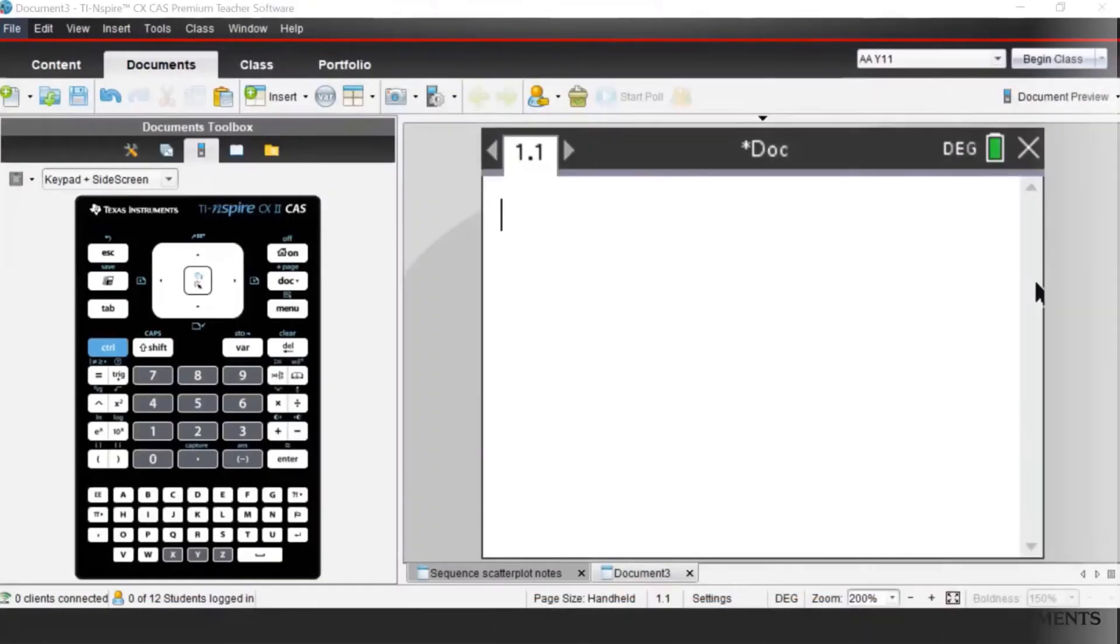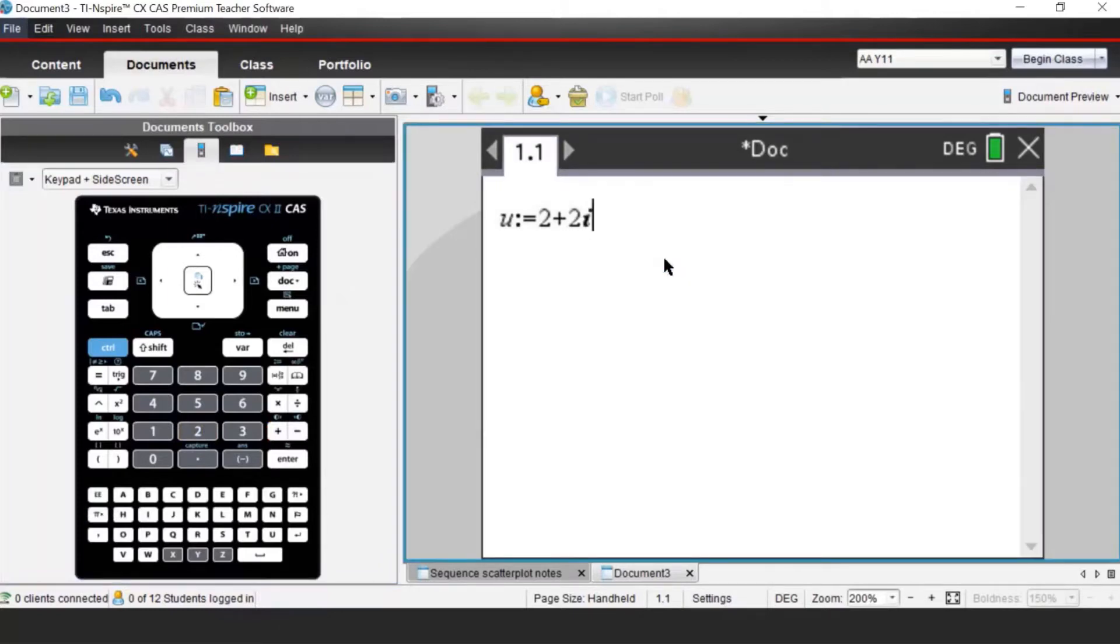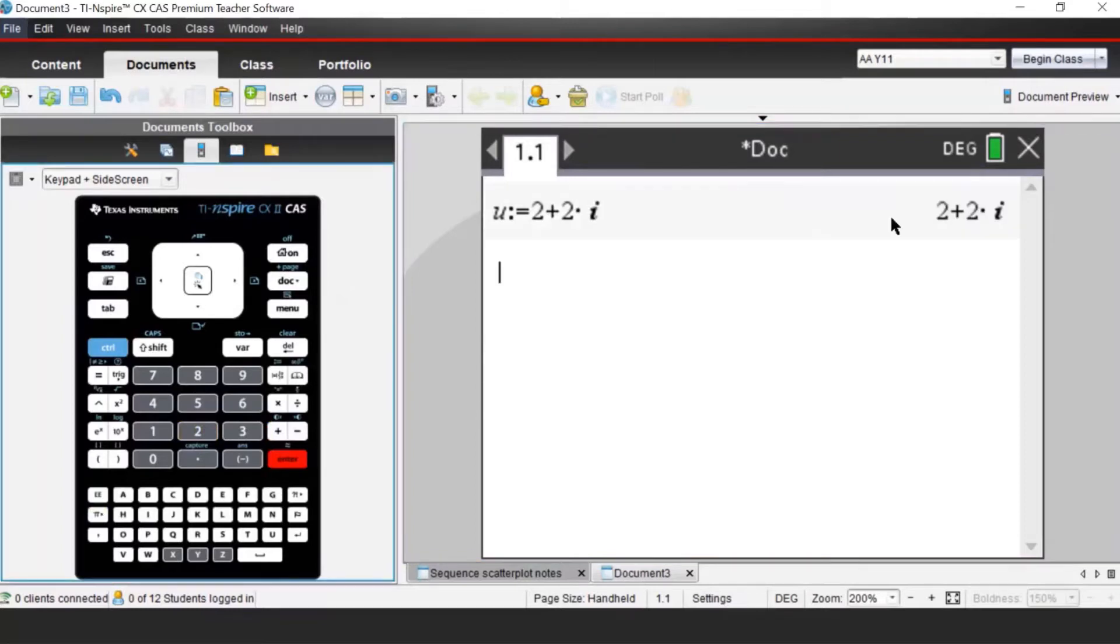To define a complex number in a calculator screen, we'll be using a Define button with control and template. I will call the complex number U and define it as 2 plus 2i. If I press Enter, the calculator now remembers that this is the number.